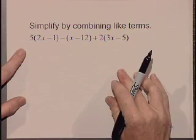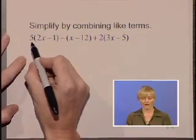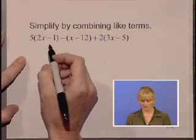Simplify by combining like terms. Our first step is to do the distributive property. We're going to take our 5 times each term inside these parentheses.